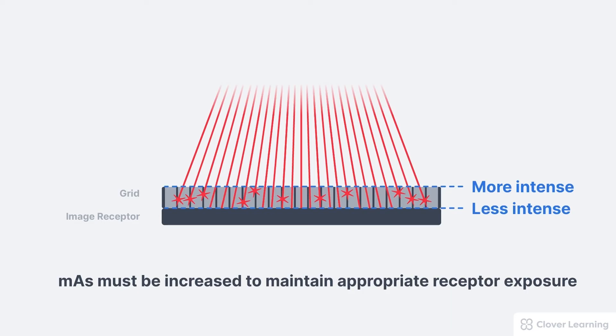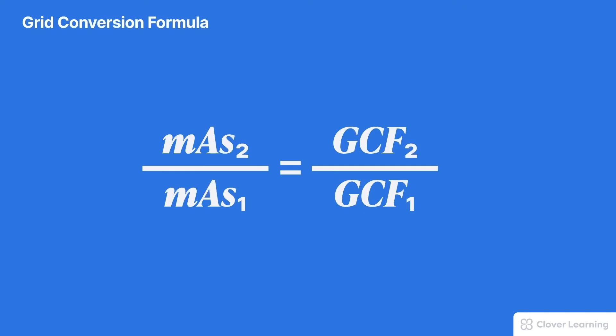When using a grid, then, the mAs must be increased to maintain the appropriate receptor exposure. Without adjusting the mAs, the noise from scatter radiation will just be replaced by quantum noise from inadequate receptor exposure. So how much should the mAs be increased? I'm sure you'll be excited to know there is some math involved. This is called the grid conversion formula.